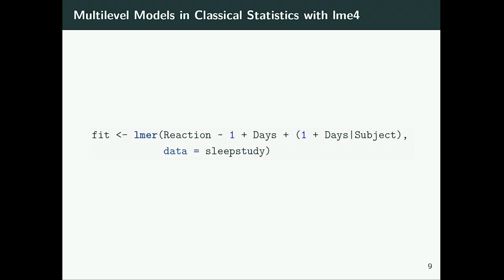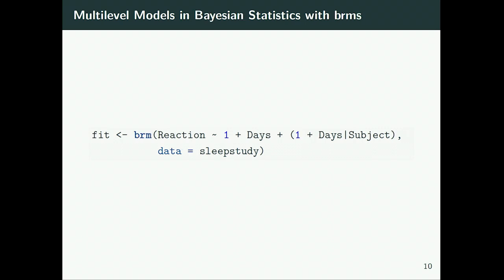How do we do a multilevel model in LME4 — the classical frequentist way? We call LME4, say what the response variable is, specify the population-level fixed effects, then specify the group-level effects — saying that both the intercept and the effect of days can vary across subjects — and specify the dataset as sleep study. Many people think Bayesian statistics is very complicated, but actually it isn't. When we just change one thing — instead of calling LME4, we call BRM — it just works the same way. BRMS uses the LME4 syntax, so you can use BRM as a drop-in replacement of LME4, getting full Bayesian inference with far more informative output.